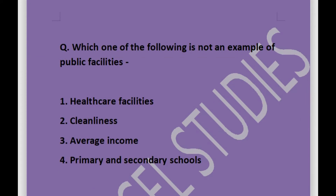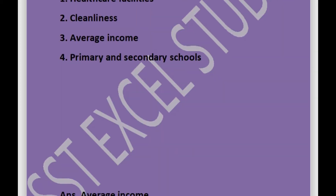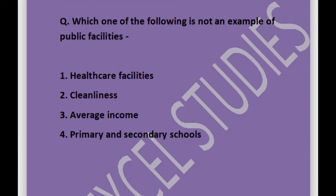Next question: which one of the following is not an example of public facilities? Options are healthcare facilities, cleanliness, average income, or primary and secondary schools. Answer is average income. Average income is not a type of public facility.